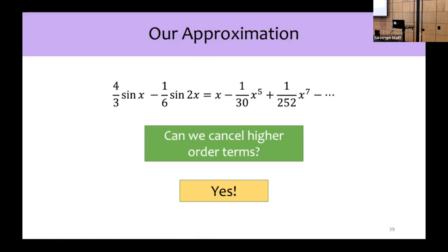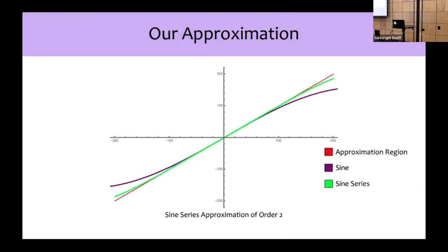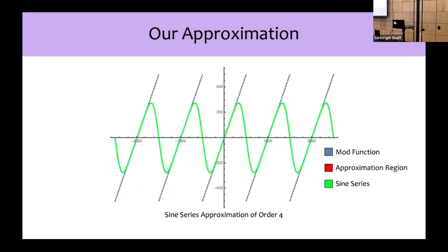Going back to our picture, this was the sine series approximation of order 2. If you add an additional sin(3x) term, the approximation gets even better. And by the time we add a sin(4x) term, you can't even see the red line anymore — the approximation region is completely covered by our sine series approximation. Zooming out, our sine series approximation to the mod function is a very good approximation in the approximation regions we care about, but, as expected, is not a good approximation outside these regions.